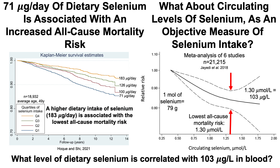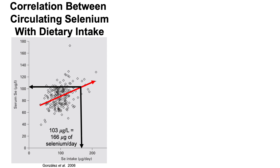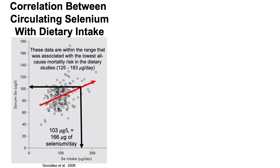So what level of dietary selenium correlates with 103 micrograms per liter of blood selenium? Looking at serum selenium on the y-axis versus dietary selenium intake on the x-axis, higher intake correlates with higher circulating levels. By extrapolation from the trend line, 103 micrograms per liter corresponds to approximately 166 micrograms of selenium per day. Notably, this falls within the range identified in the dietary studies — 125 to 183 micrograms per day.